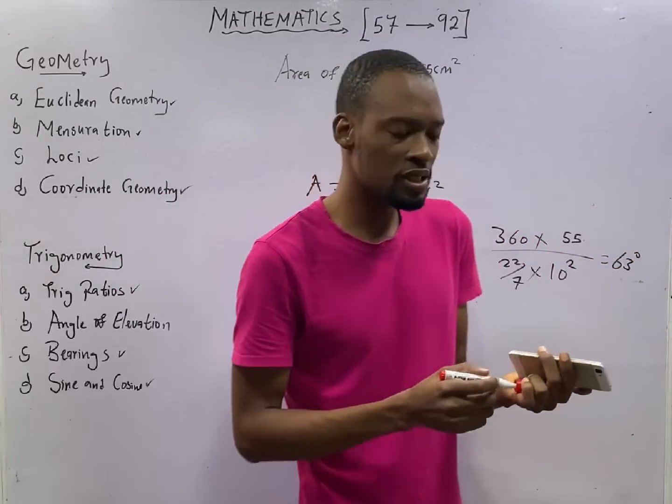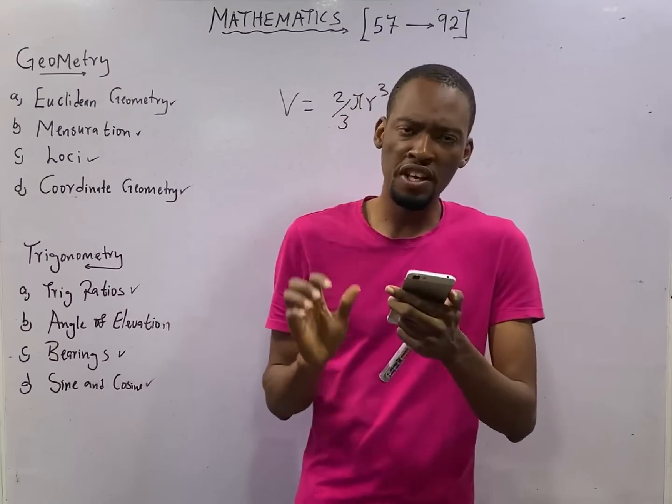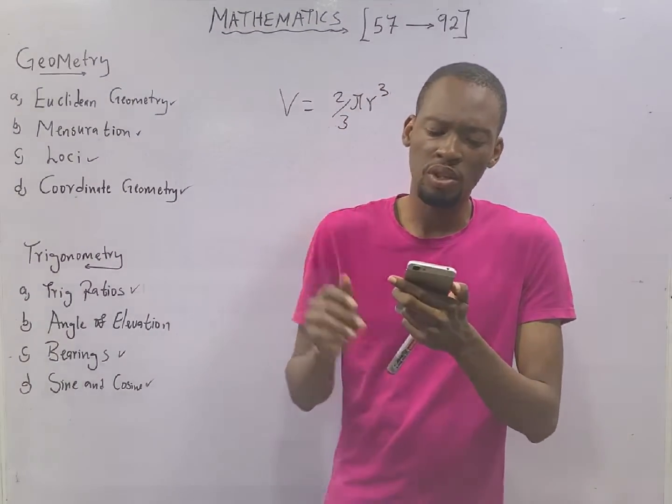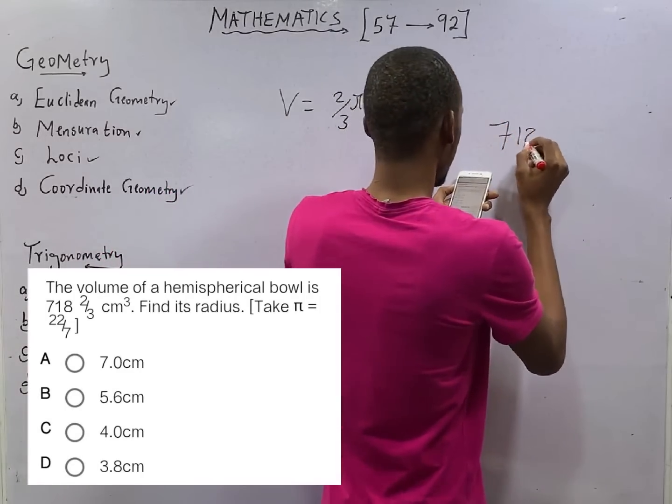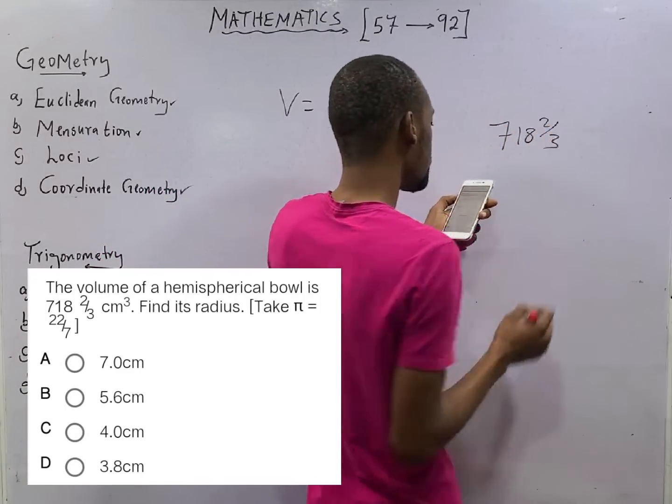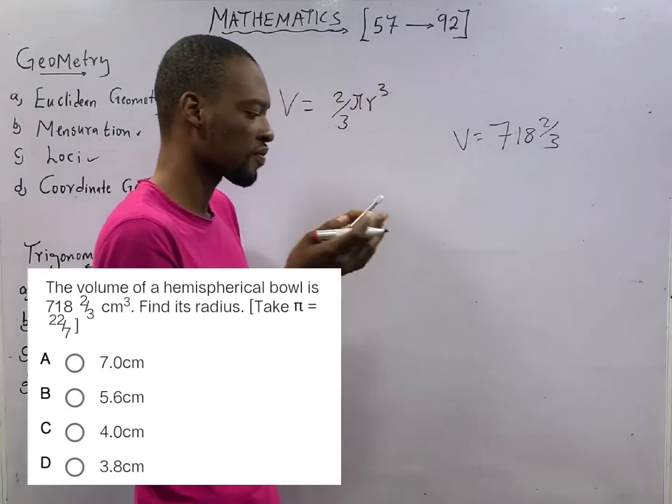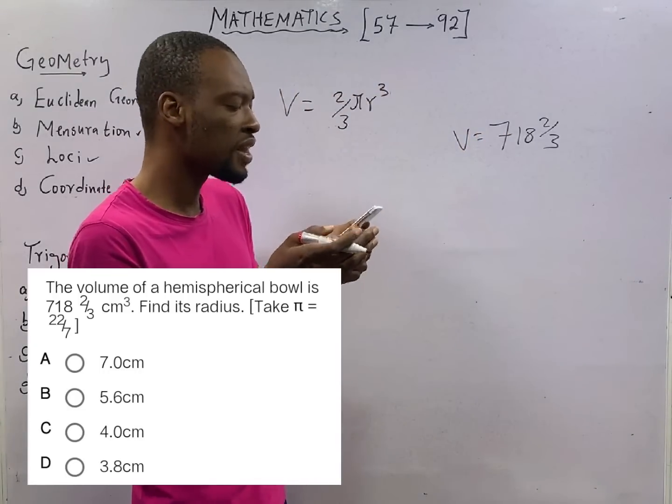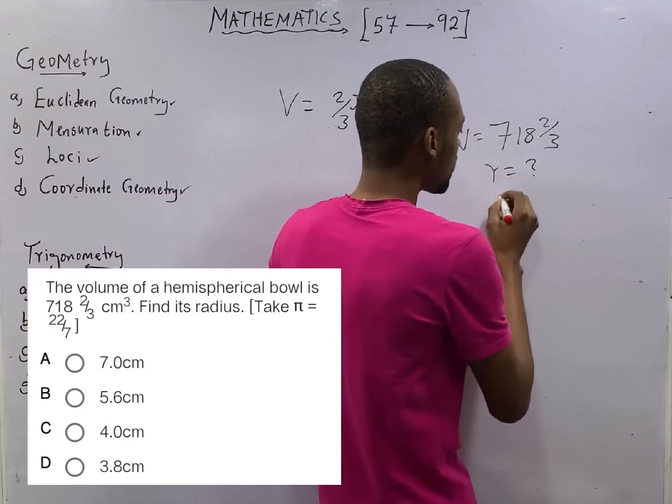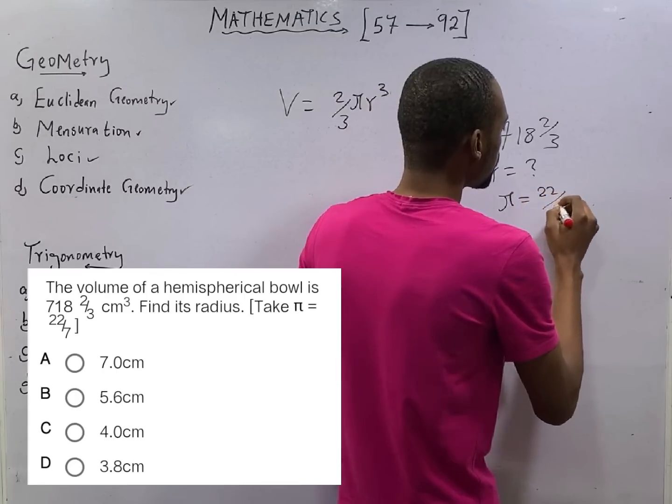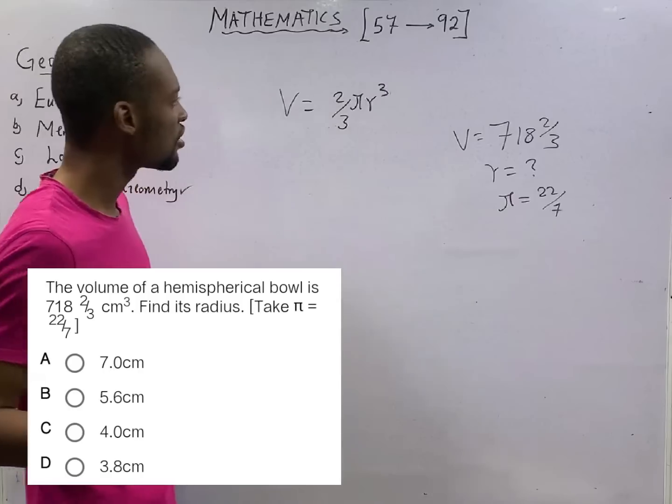So that is basically your answer. The volume of a hemispherical bowl is 718 2/3. This is the volume of the hemisphere. Find the radius. Radius is equal to question mark. Take pi to be 22 over 7.